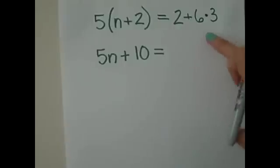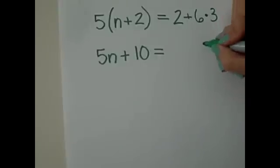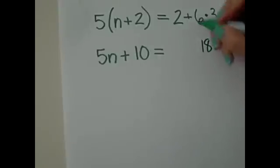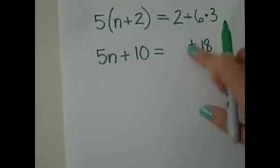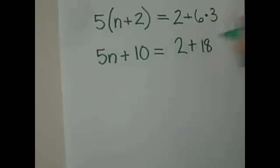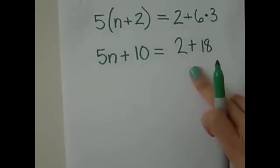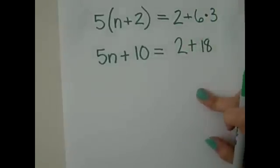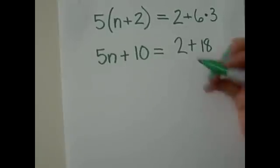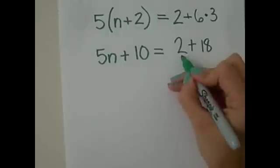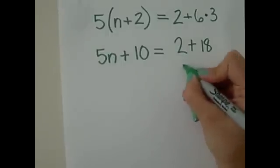But in this case, it's multiplication, so we do that first, following the order of operations. And that's 6 times 3 equals 18. Let's bring that down. Let's bring that plus sign down. Now, we're going to work on this side of the problem. 2 plus 18 equals 20.